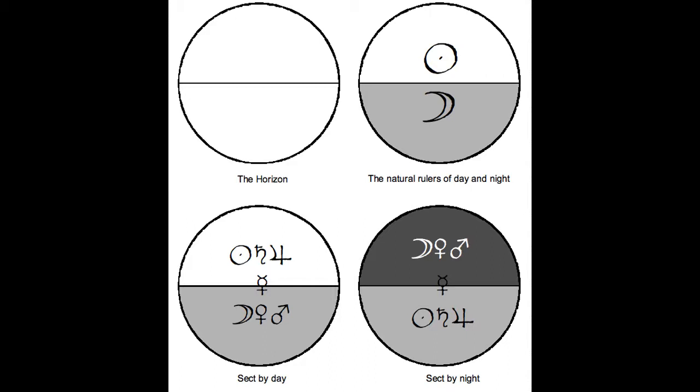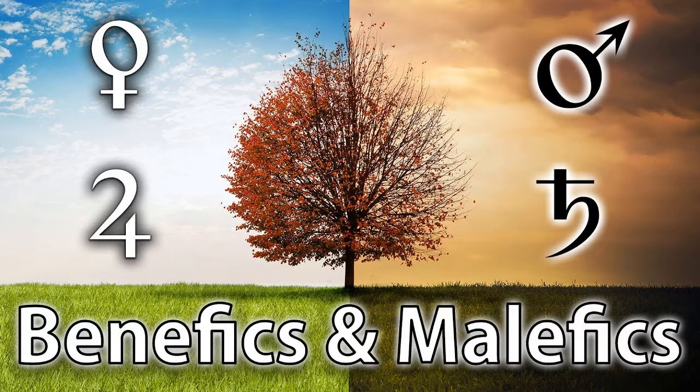Mercury is equivalent and is considered diurnal when it rises before the Sun. Planets act in a more balanced, positive and effective way when in a chart that agrees with their sect. Planets in a chart that differs from their sect are either less positive or more harmful. They are less at home or at ease and are more likely to act in an unbalanced or unfavorable manner. Benefits are more benefic when in sect and malefics are more malefic when out of sect.